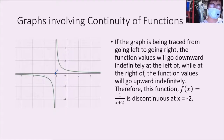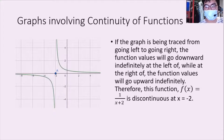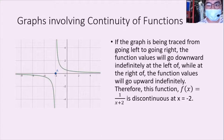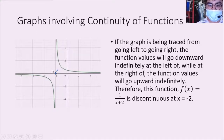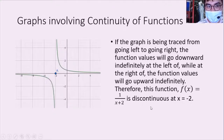On the other hand, if the graph is traced going left to right and the function values go downward indefinitely at the left and upward indefinitely at the right, then the function f(x) = 1/(x+2) is discontinuous at x = -2. Pag nag-evaluate tayo using x = -2, hindi naman siya part ng graph — it's outside the graph, so hindi siya nag-e-exist. Magiging discontinuous ang function kapag hindi nag-e-exist ang value kapag ine-evaluate.